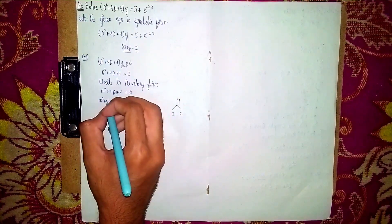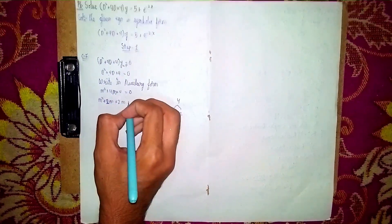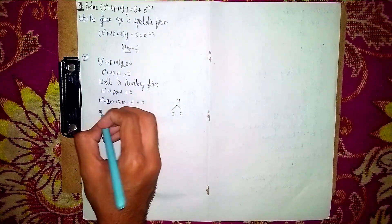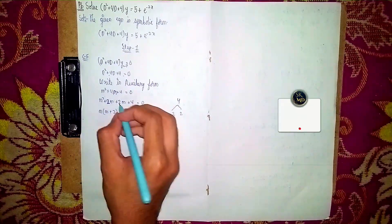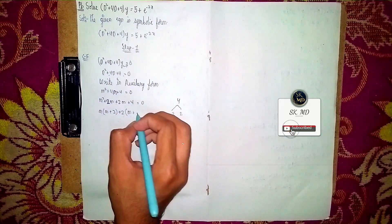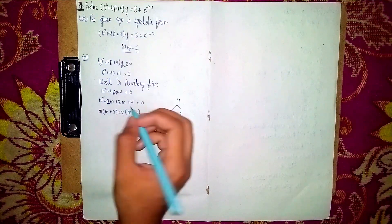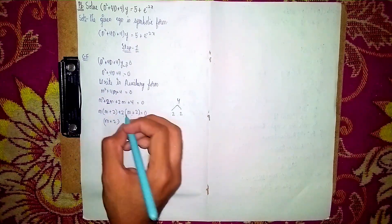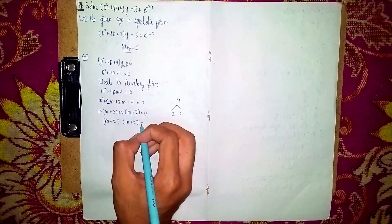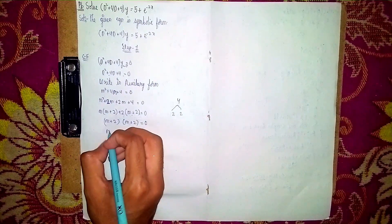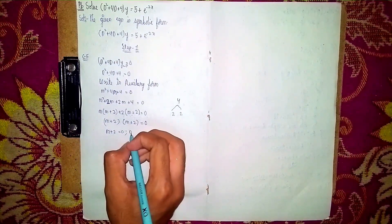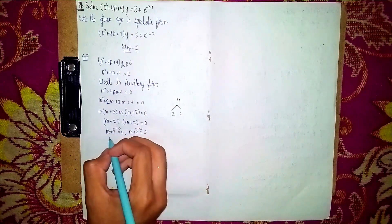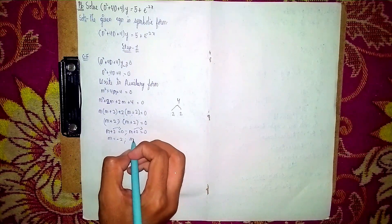Using middle term splitting: m² + 4m + 4 = 0 becomes (m + 2)(m + 2) = 0. Taking m outside: m(m + 2) + 2(m + 2) = 0, so (m + 2)(m + 2) = 0. Separately equating each factor with zero: m + 2 = 0 gives m = −2, and again m + 2 = 0 gives m = −2.